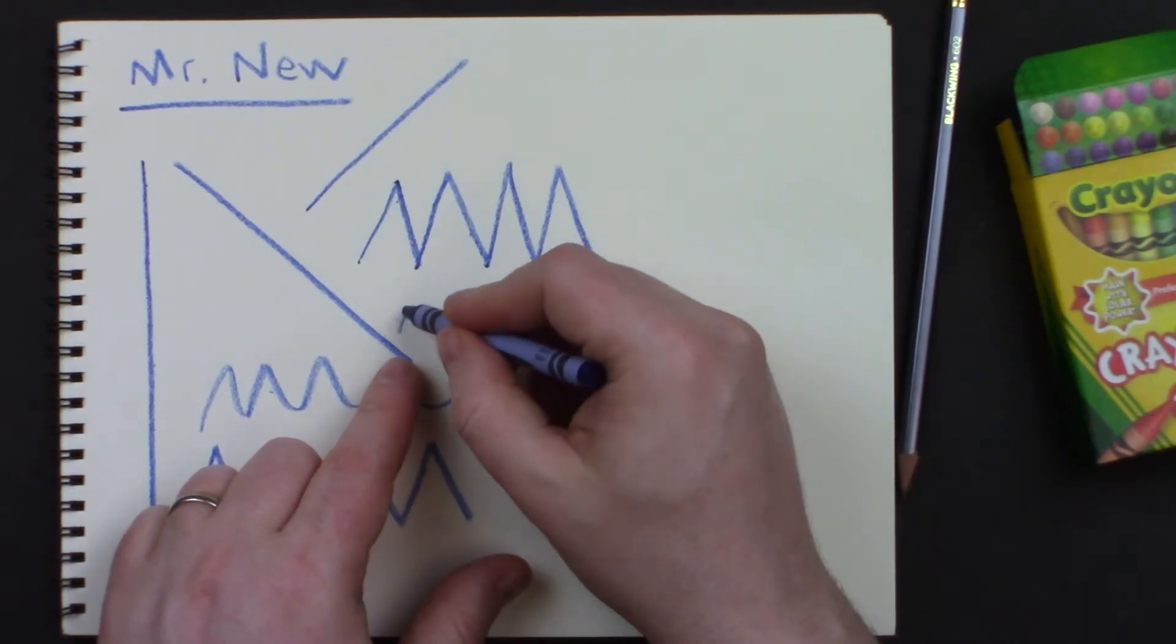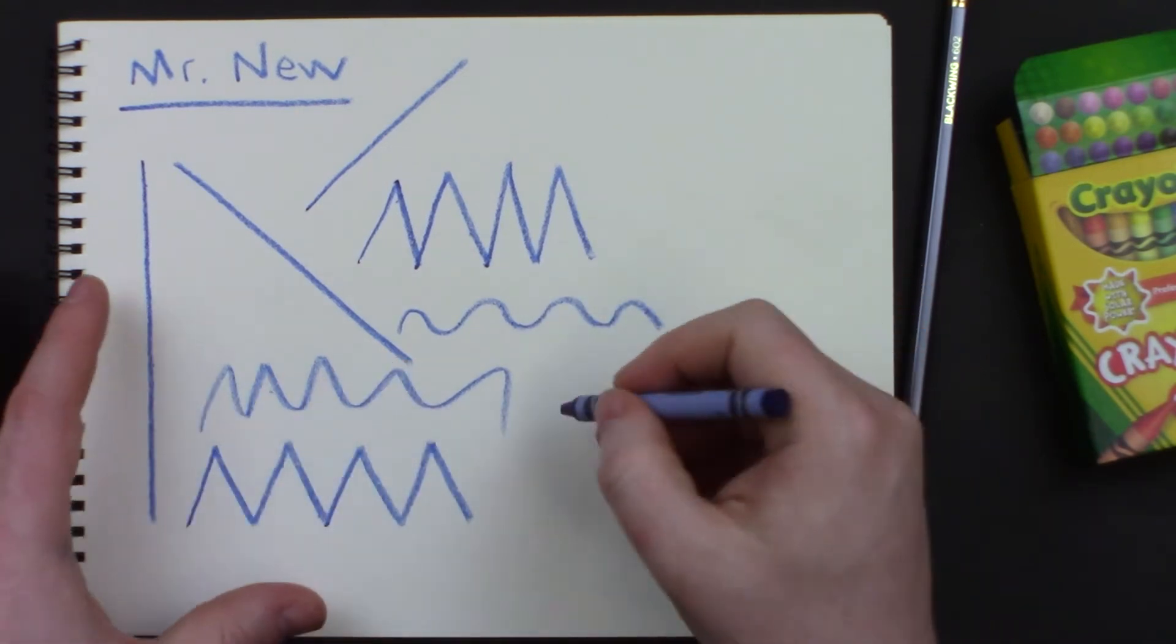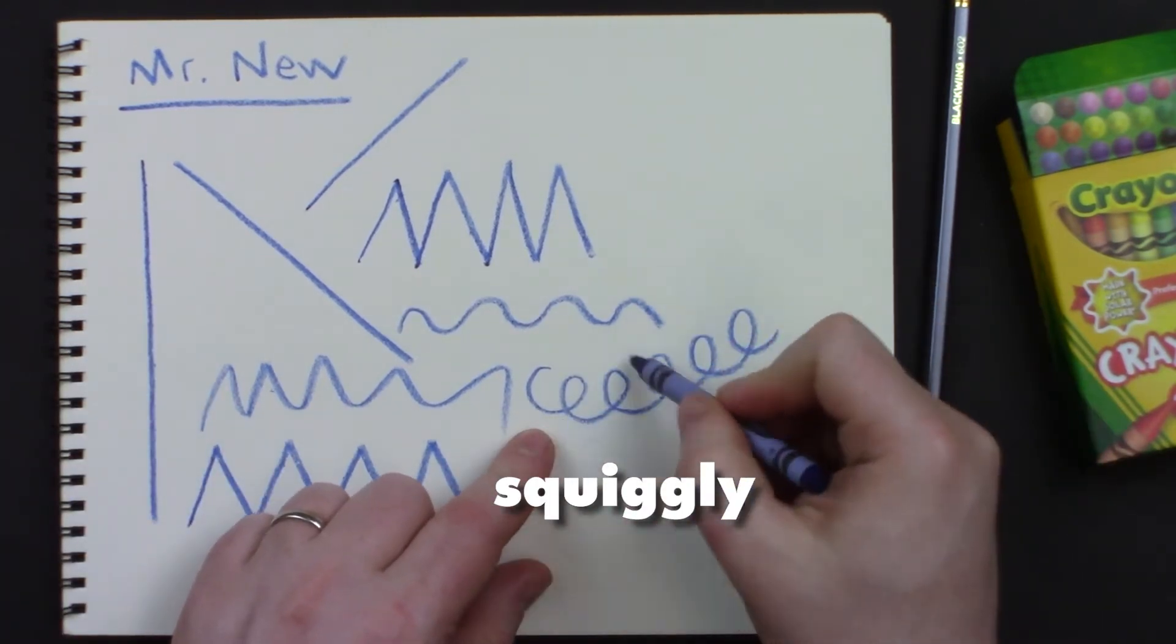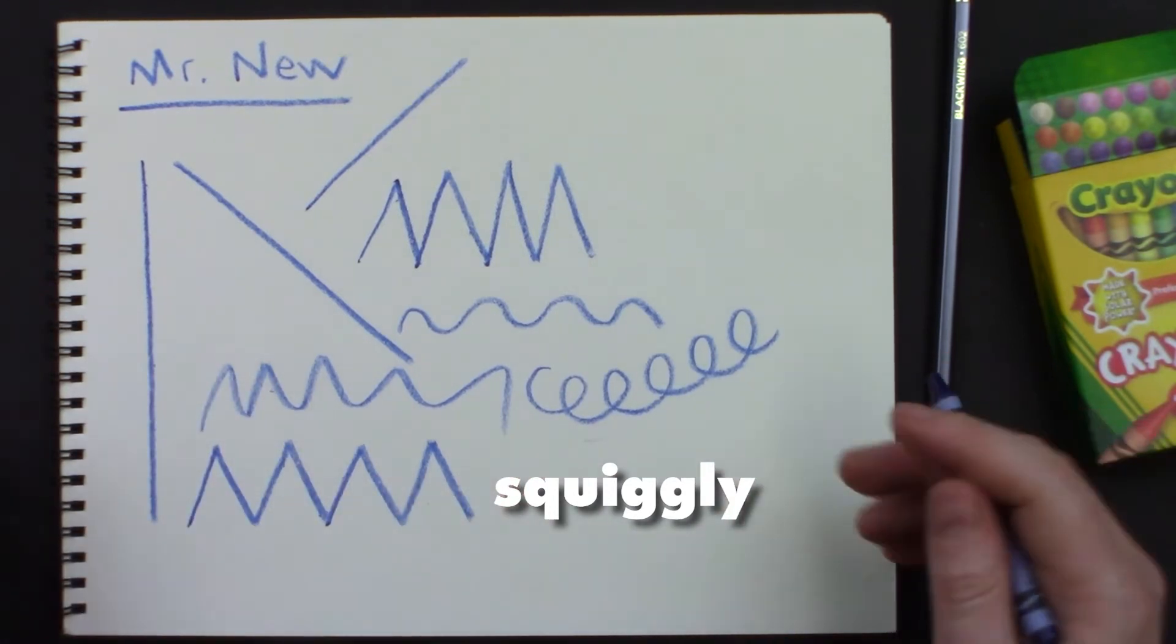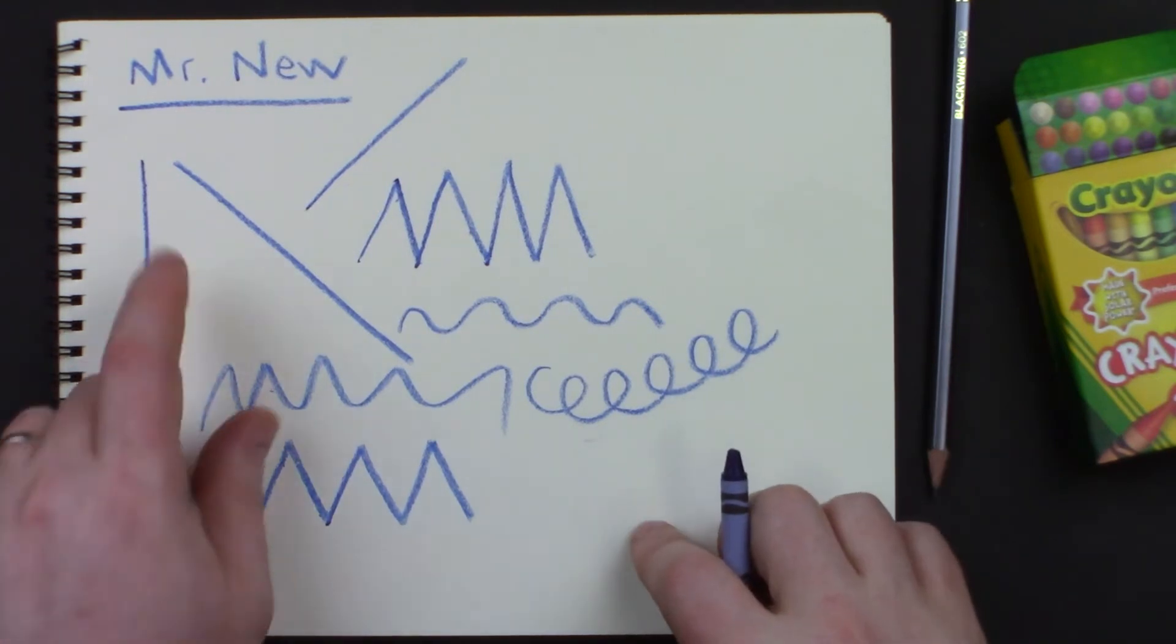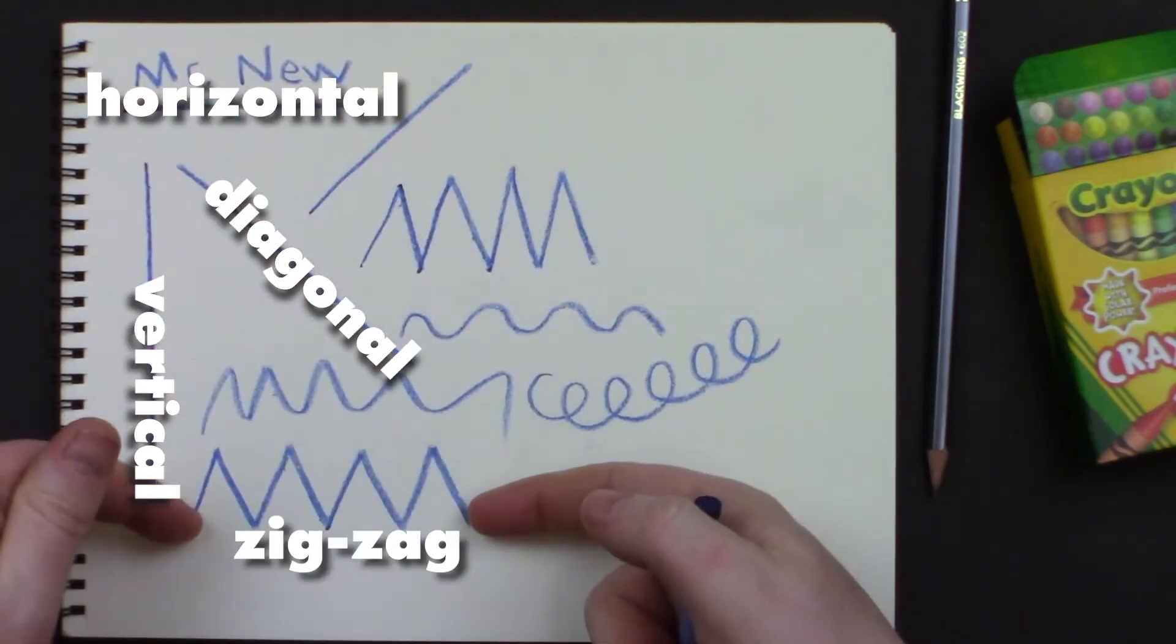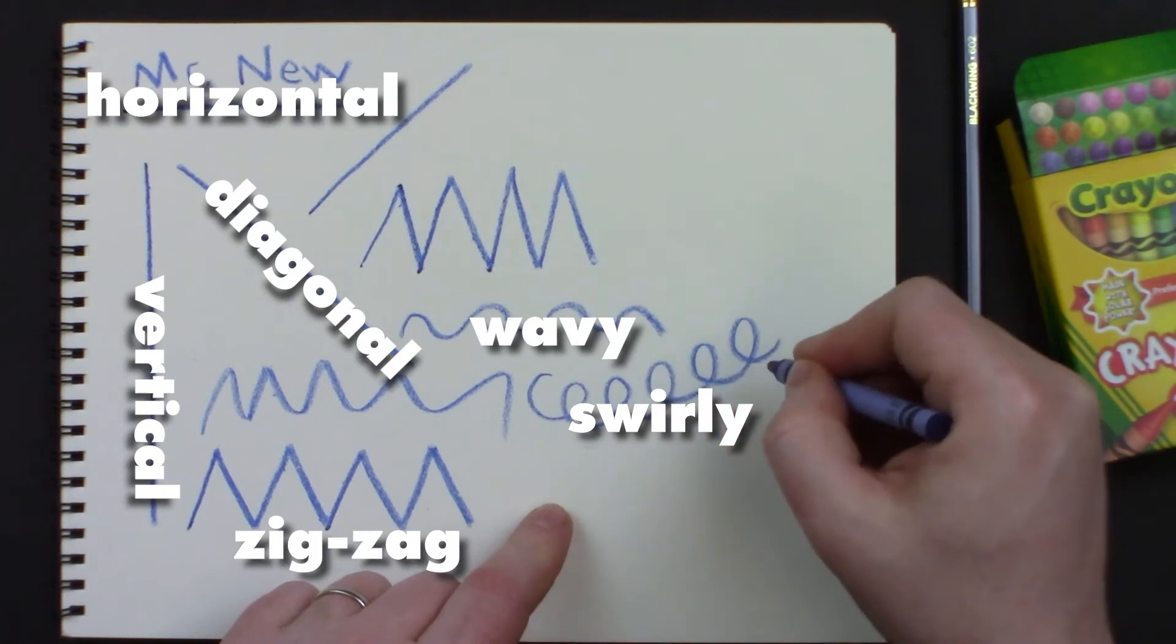What happens if I move in circles as I go? We call that a swirly or squiggly line. You see how it makes a bunch of loops? Try that. So we have practiced a whole bunch of different kinds of lines here: horizontal lines, vertical lines, diagonal lines, zigzag lines, wavy lines, swirly lines.